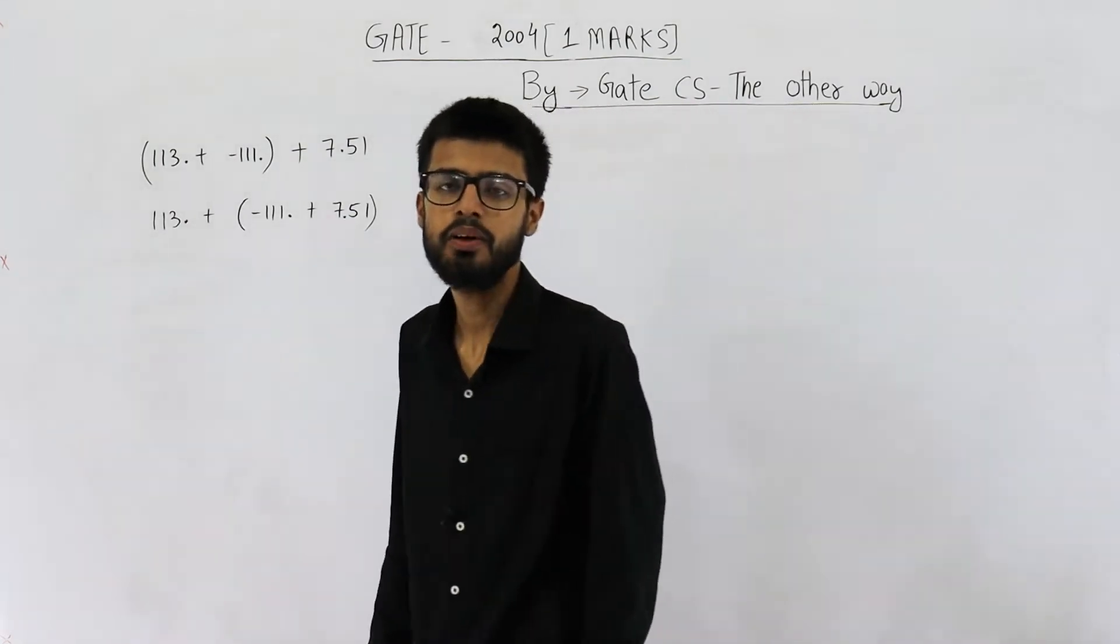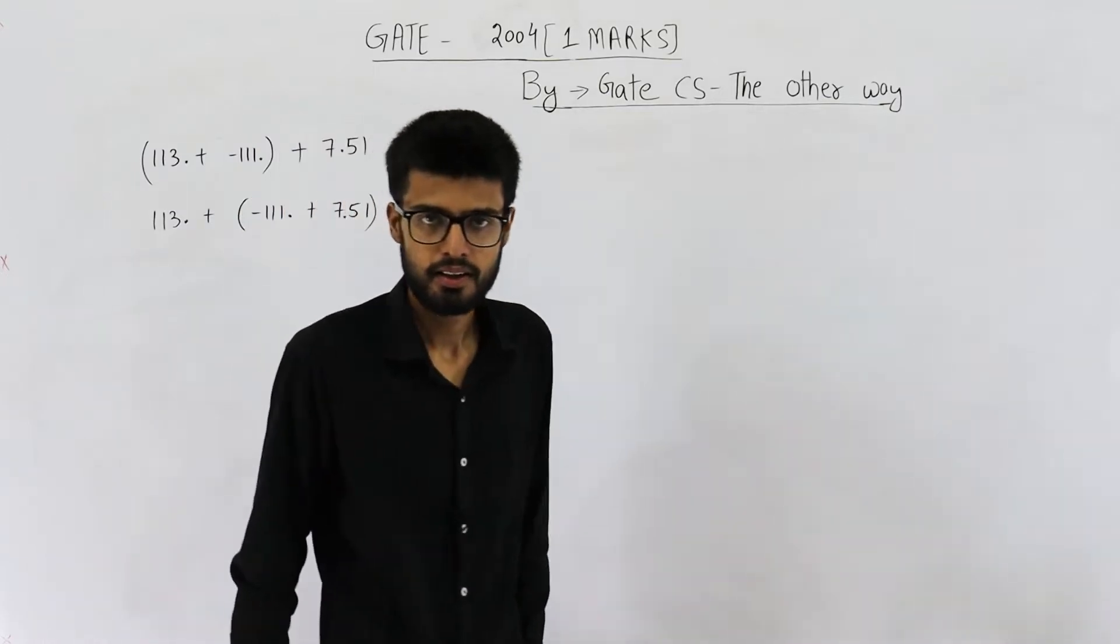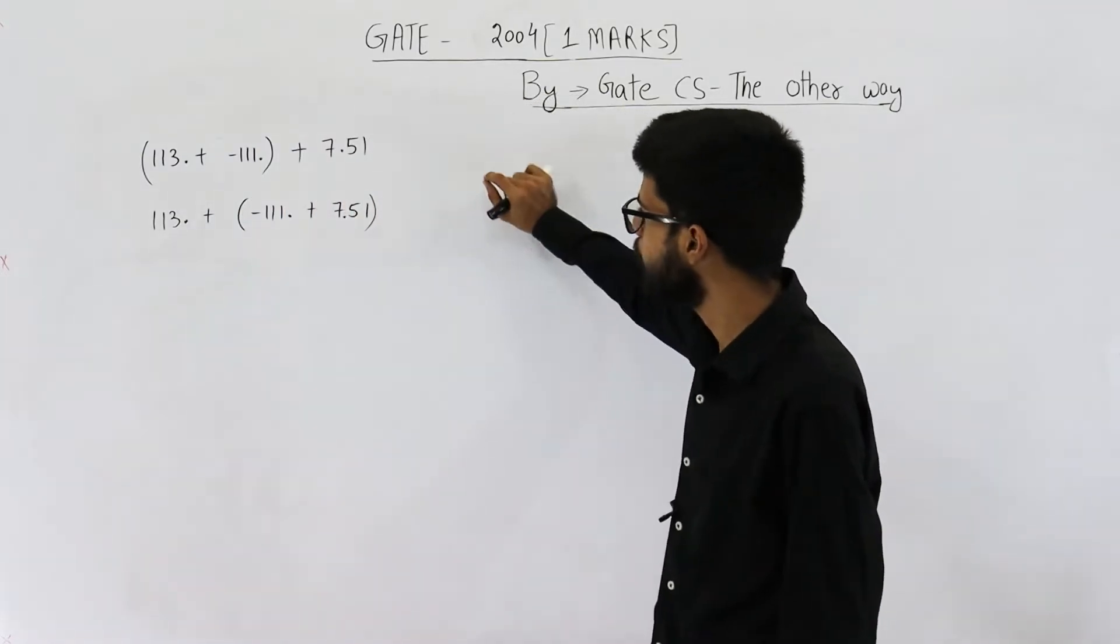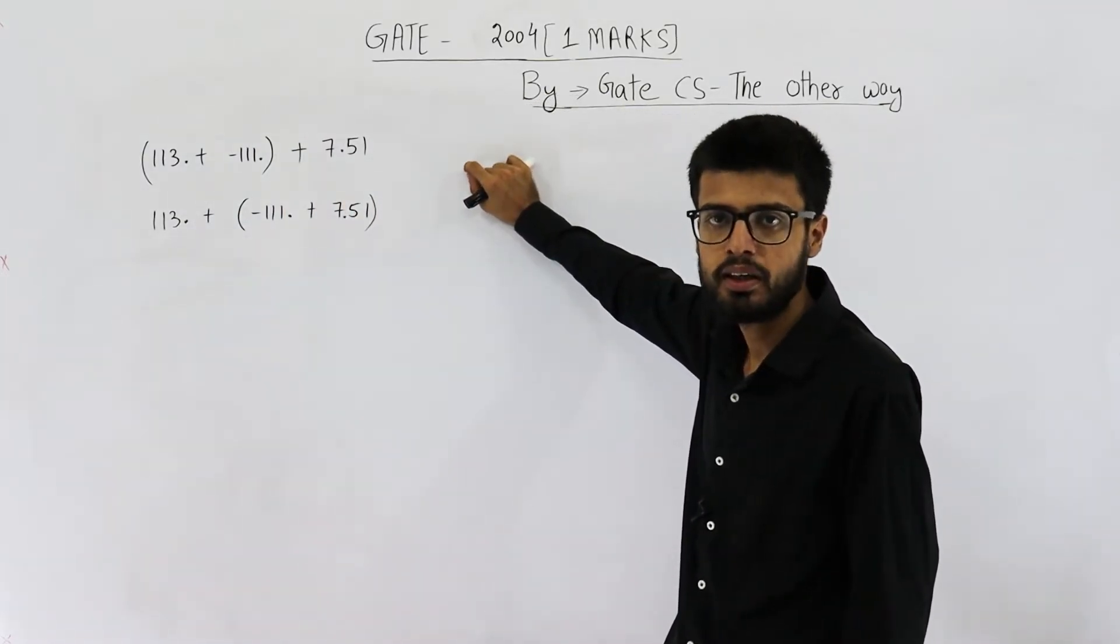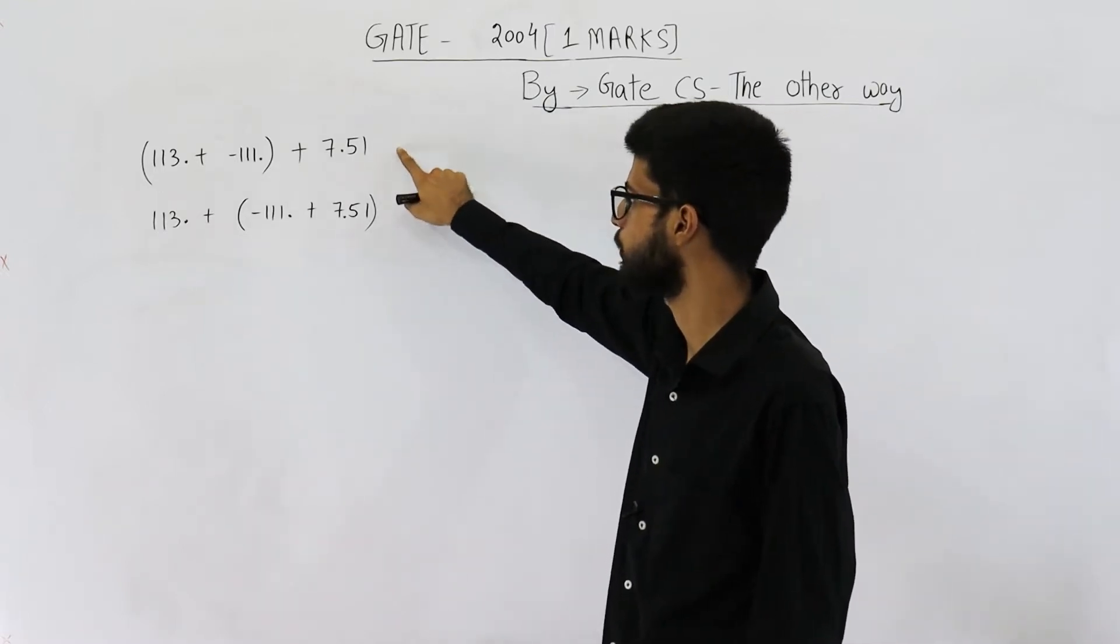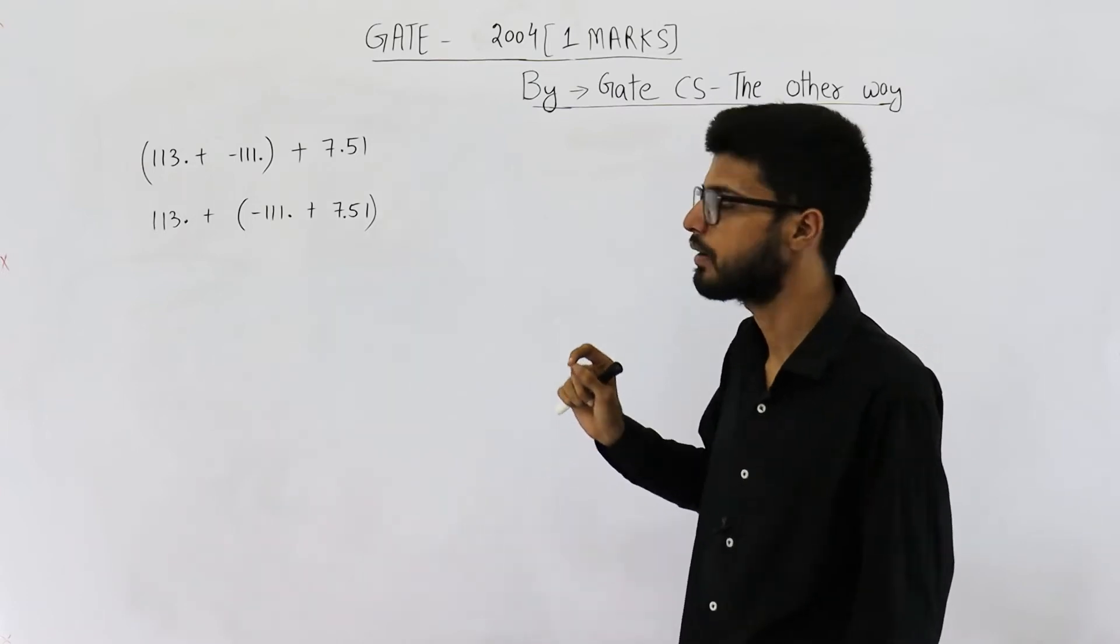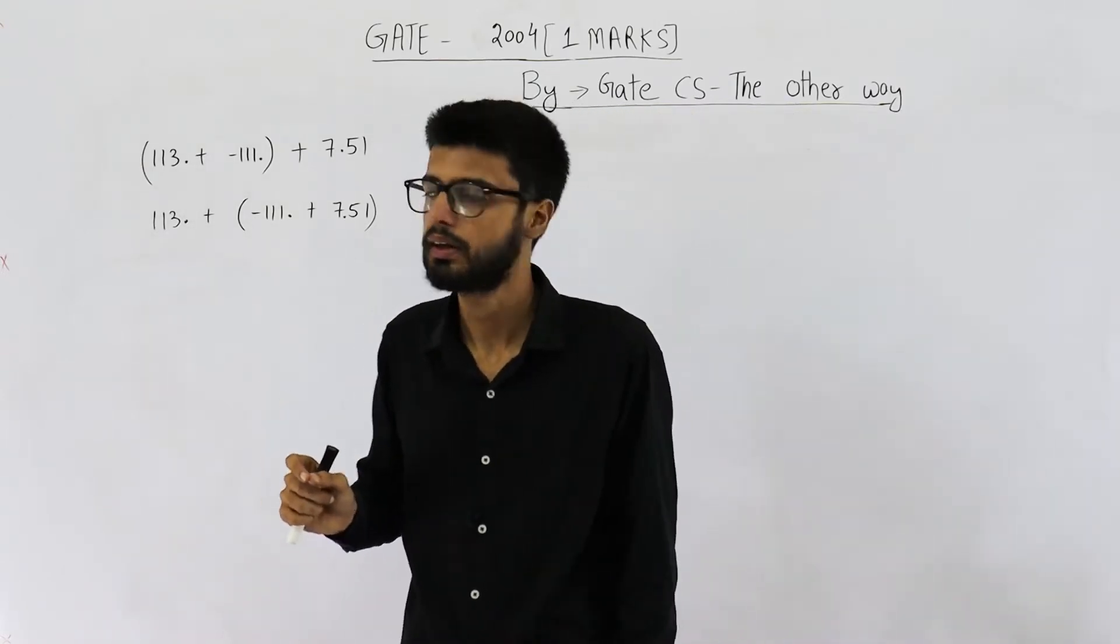Hi there. This question is from GATE 2004 exam. It was asked for one mark. They are saying, if three digit floating point arithmetic is used, what will be the result of these two expressions? Mind it, three digit floating point arithmetic, they are not saying three bit floating point arithmetic.